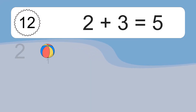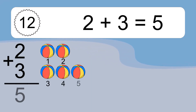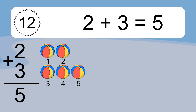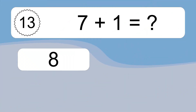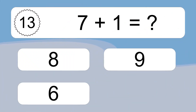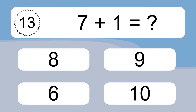2 plus 3 equals what? 2 plus 3 equals 5. Let's count it: 1, 2, 3, 4, 5.